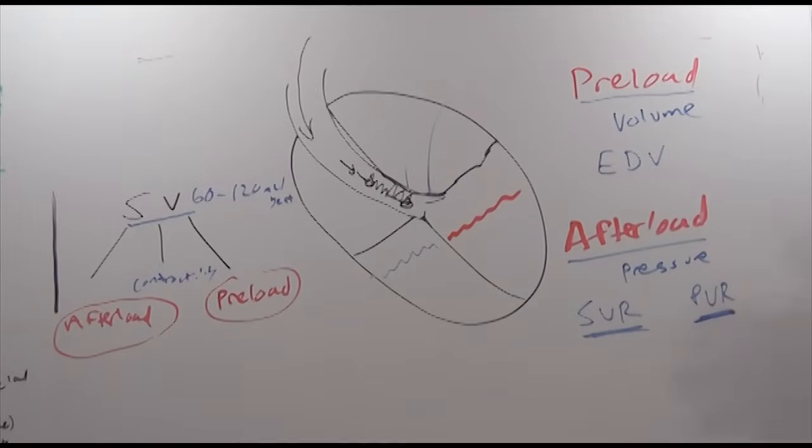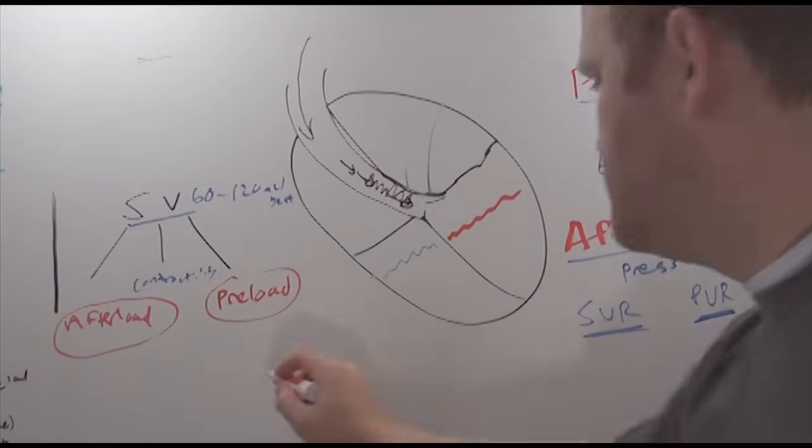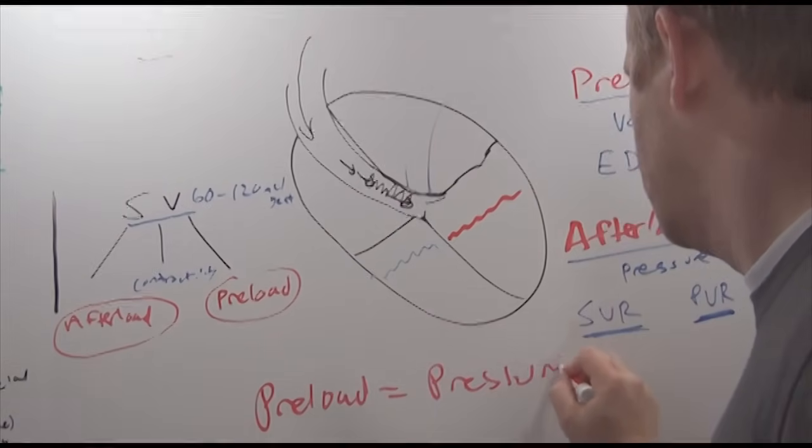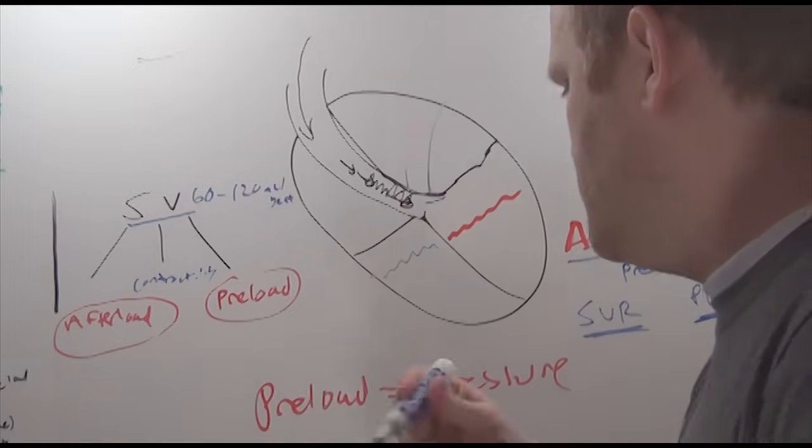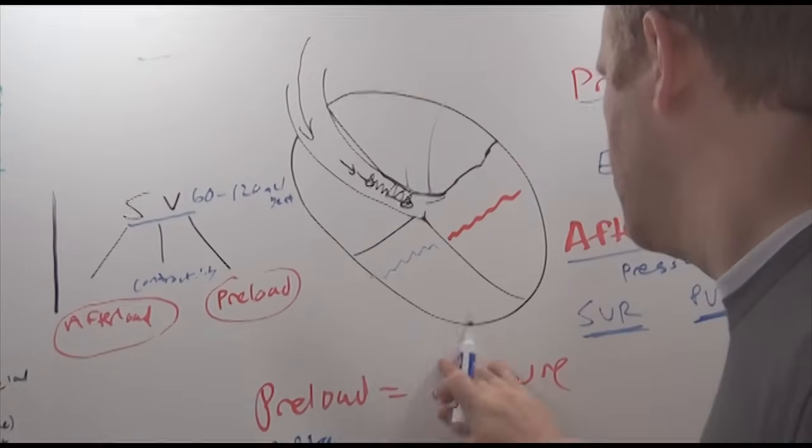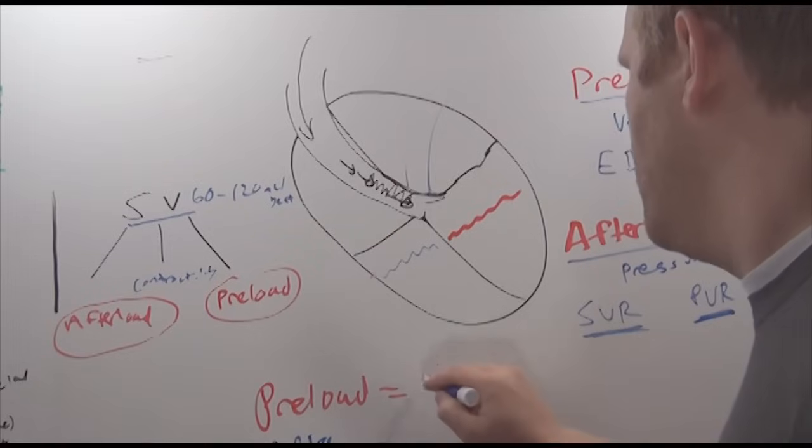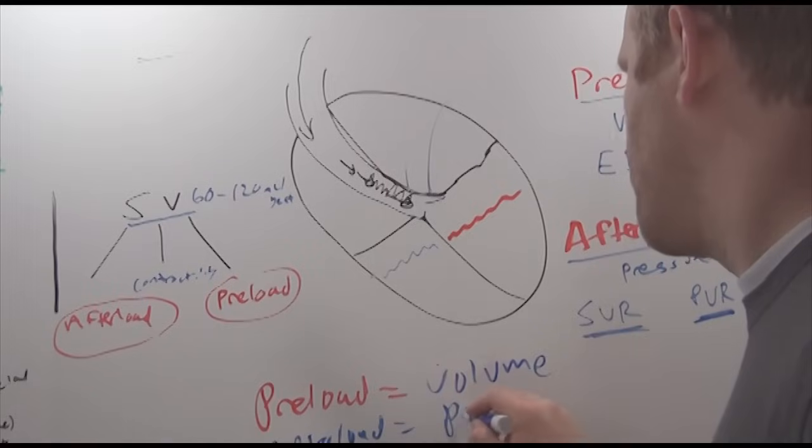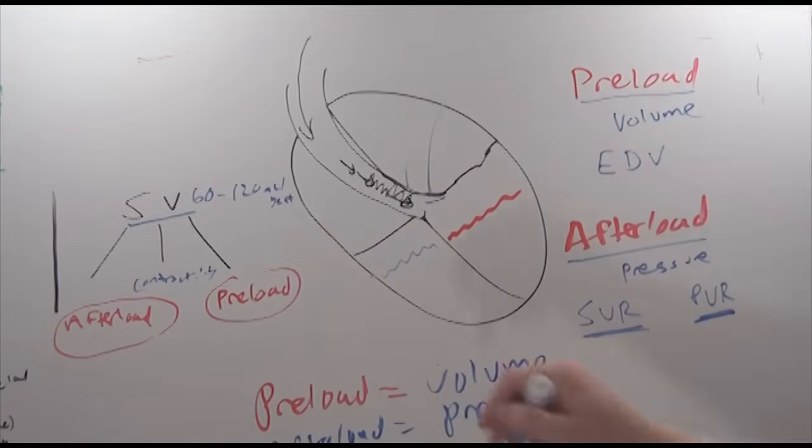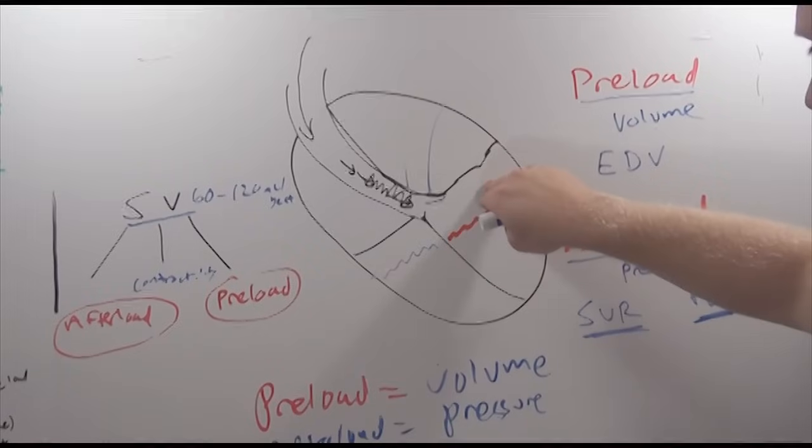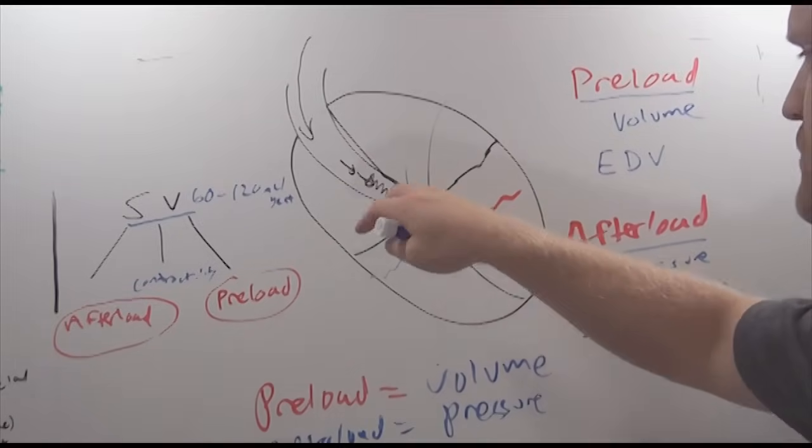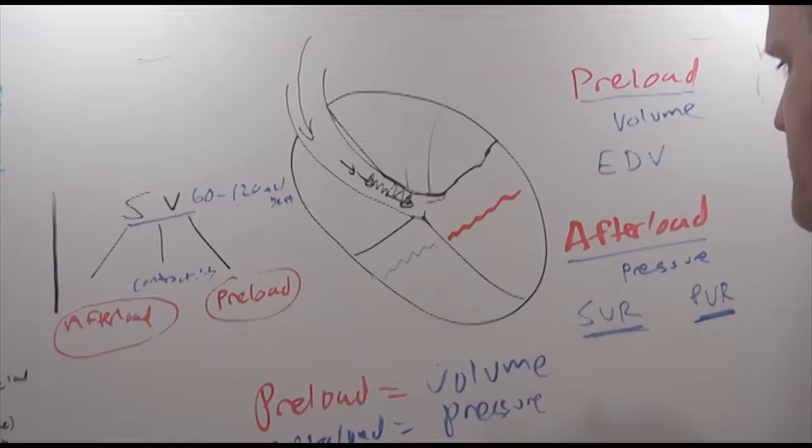So that's really it. That's preload versus afterload. So preload equals volume. Afterload equals pressure. Preload is the end diastolic volume, the volume in the ventricles at the end of diastole. Afterload is the pressure required to open these valves and get the blood out of the ventricles.